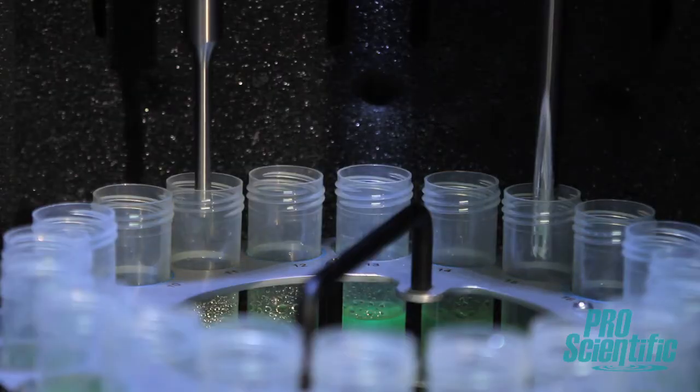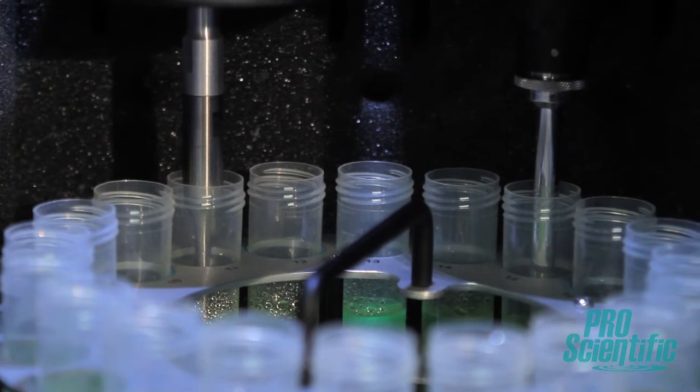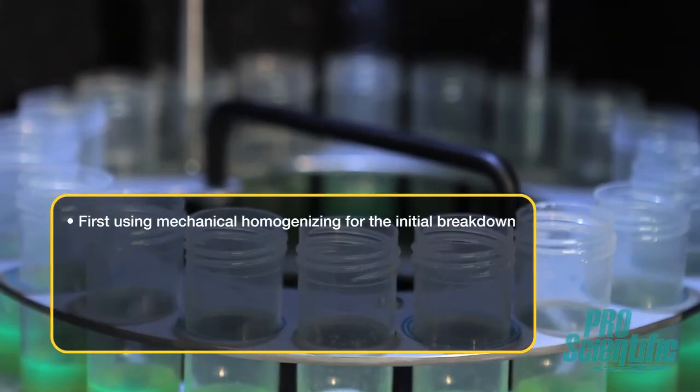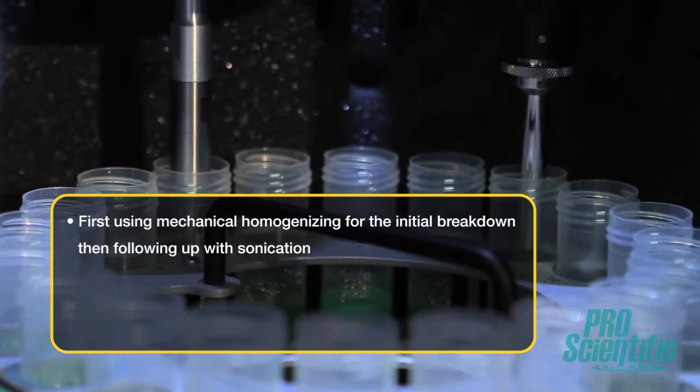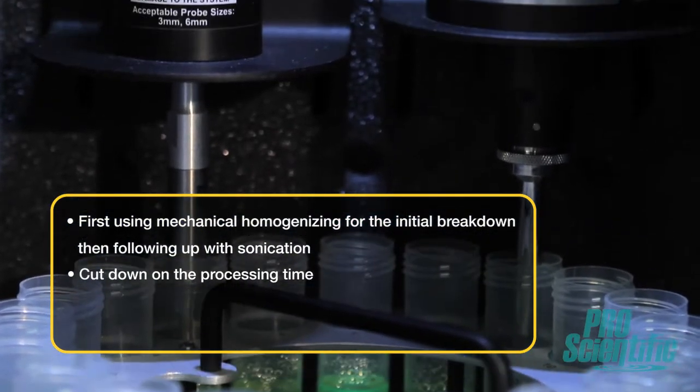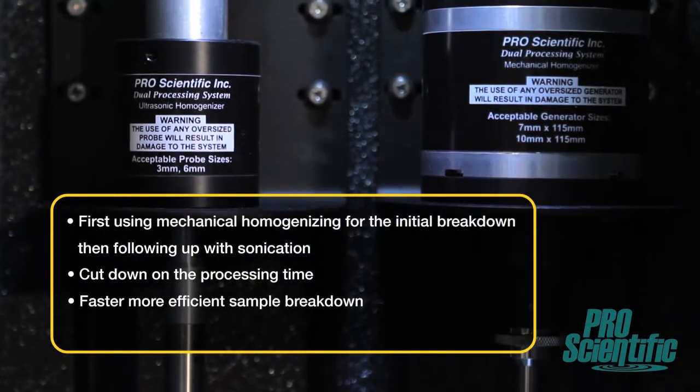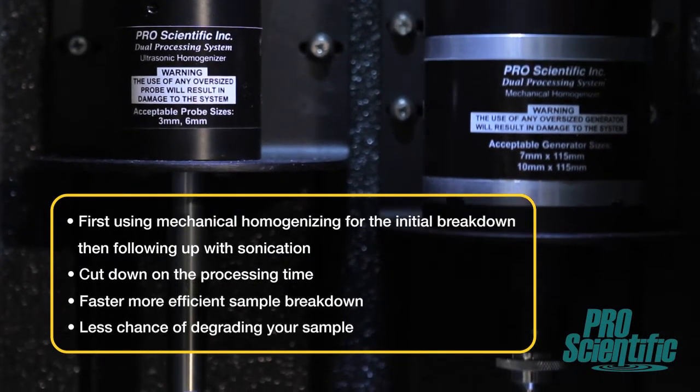The DPS20's dual processing mode takes the benefits of each method and utilizes them together without any of the downsides. By first using mechanical homogenizing for the initial breakdown and then following up with sonication, you cut down on the processing time compared to having used either homogenizing method independently. This means faster, more efficient sample breakdown with less chance of degrading your sample.